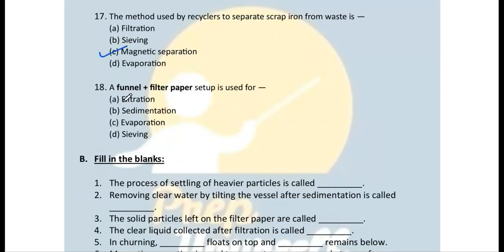Question 17: The method used by recyclers to separate scrap iron from waste is magnetic separation. Question 18: A funnel plus a filter paper setup is used for — obviously — filtration.